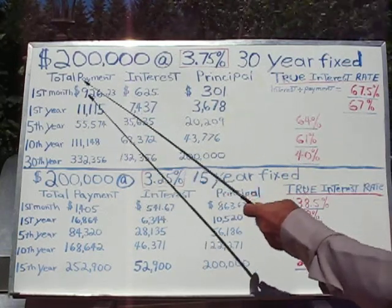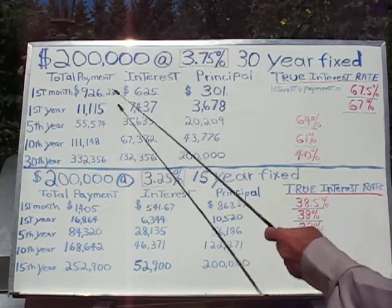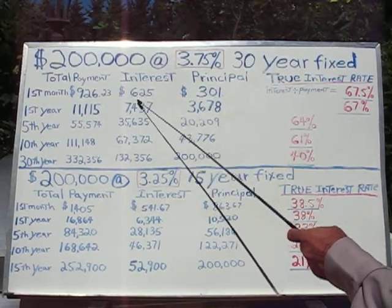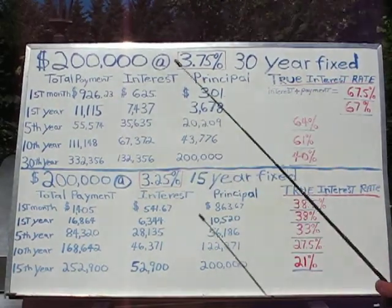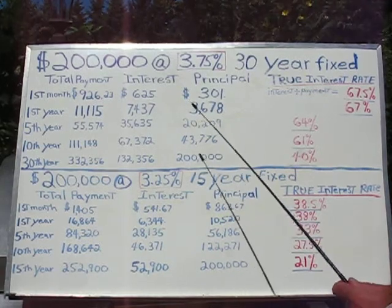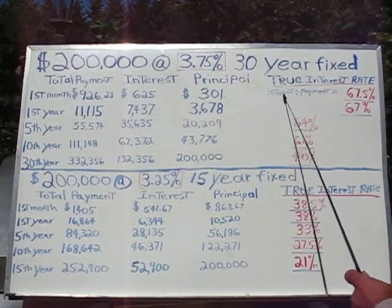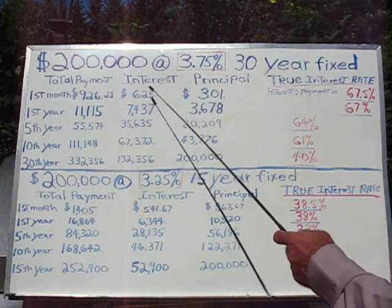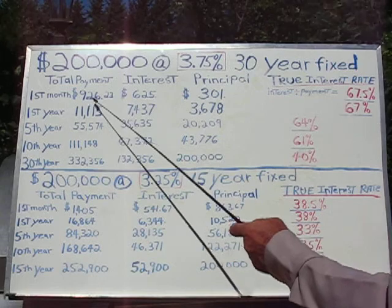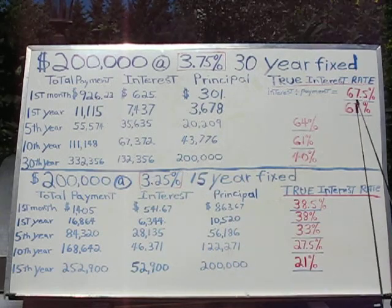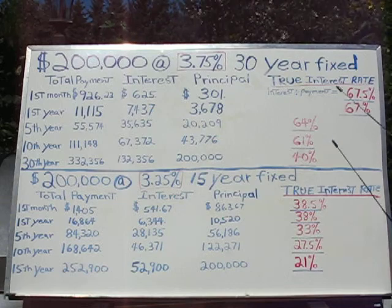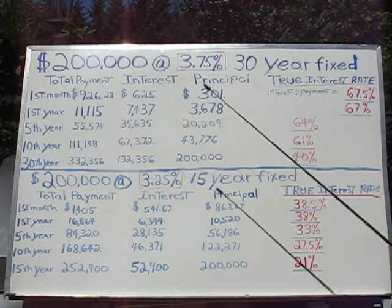The monthly payment on that mortgage is $926. Out of that $926, $625 is interest. Now, here's the key: in order to really figure the interest rate, all you need to do is divide the interest by the payment. So in this case, in month one, if you divide $625 by $926, you come up with 67.5%. That is the true interest rate in month one.